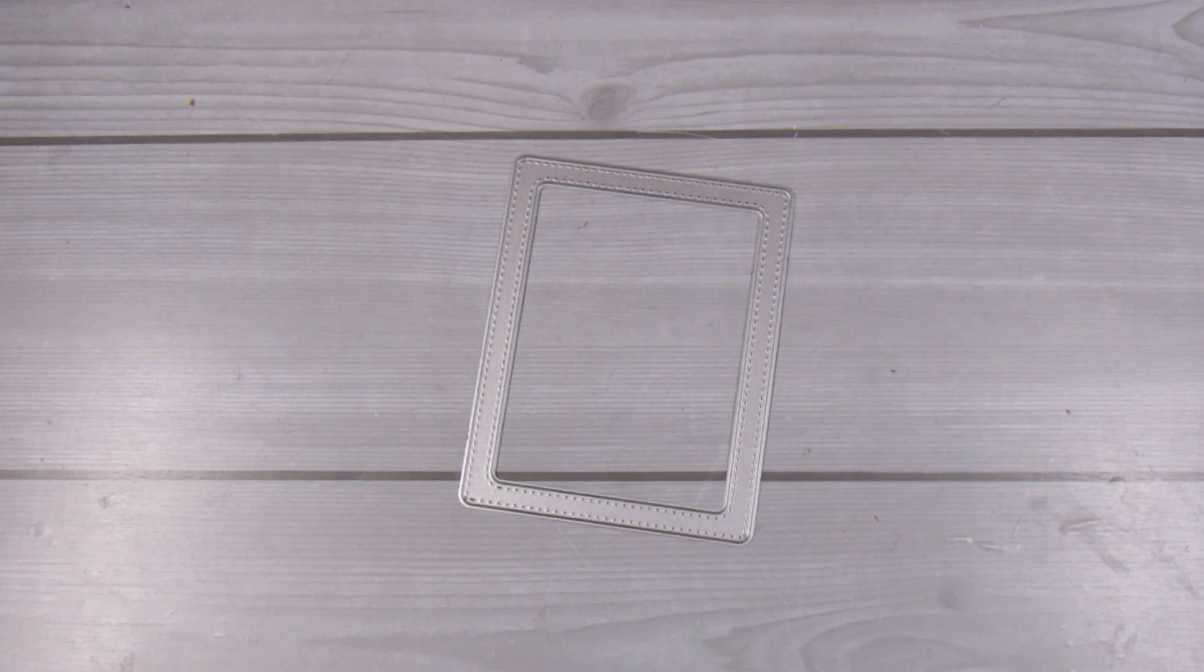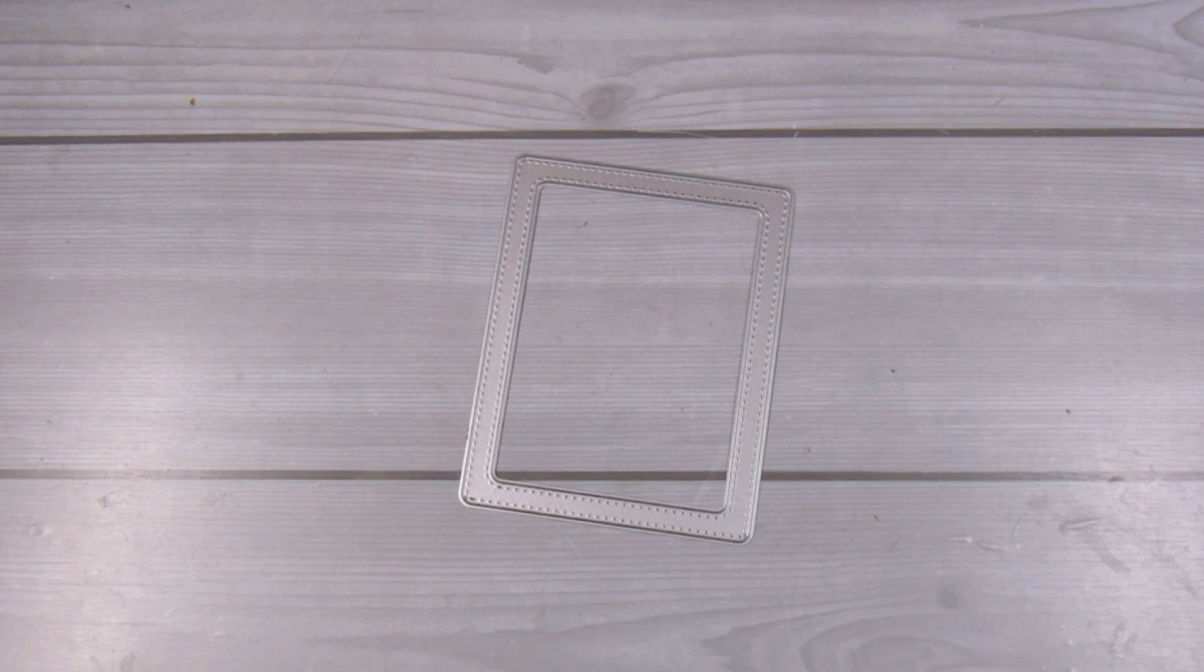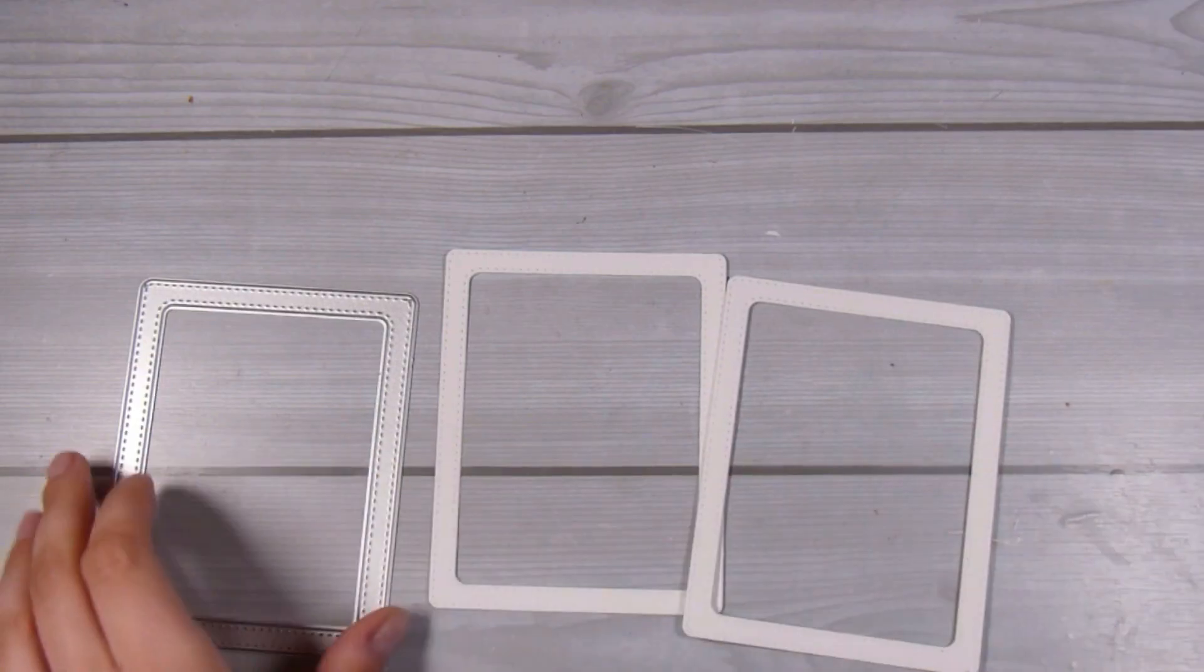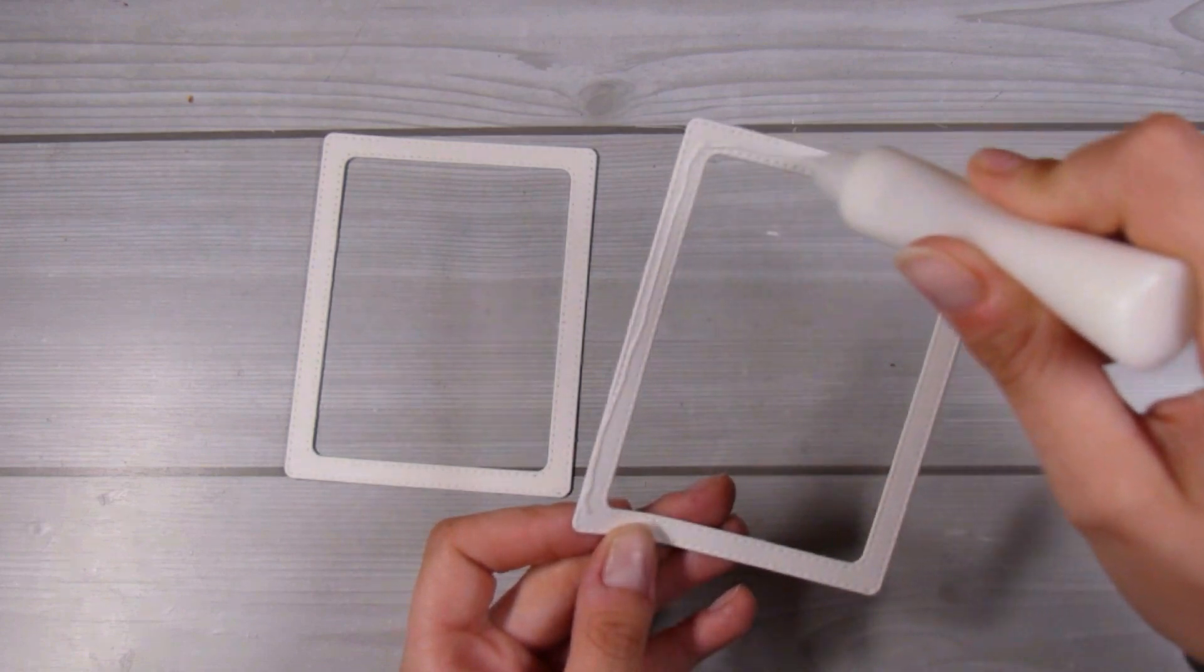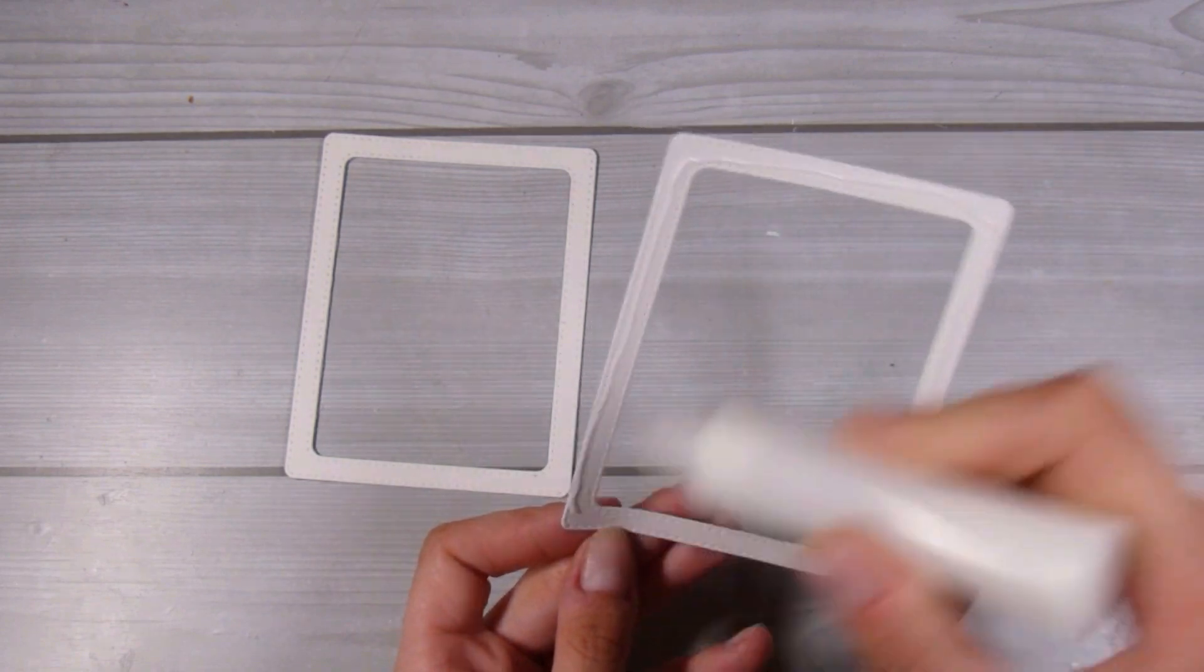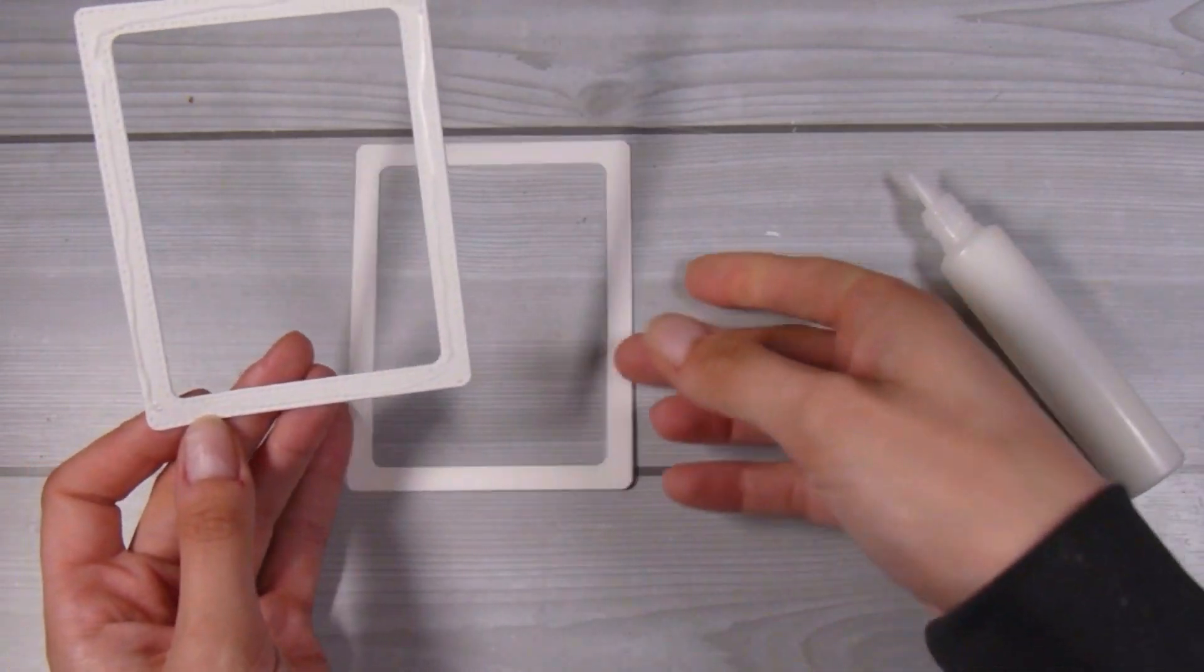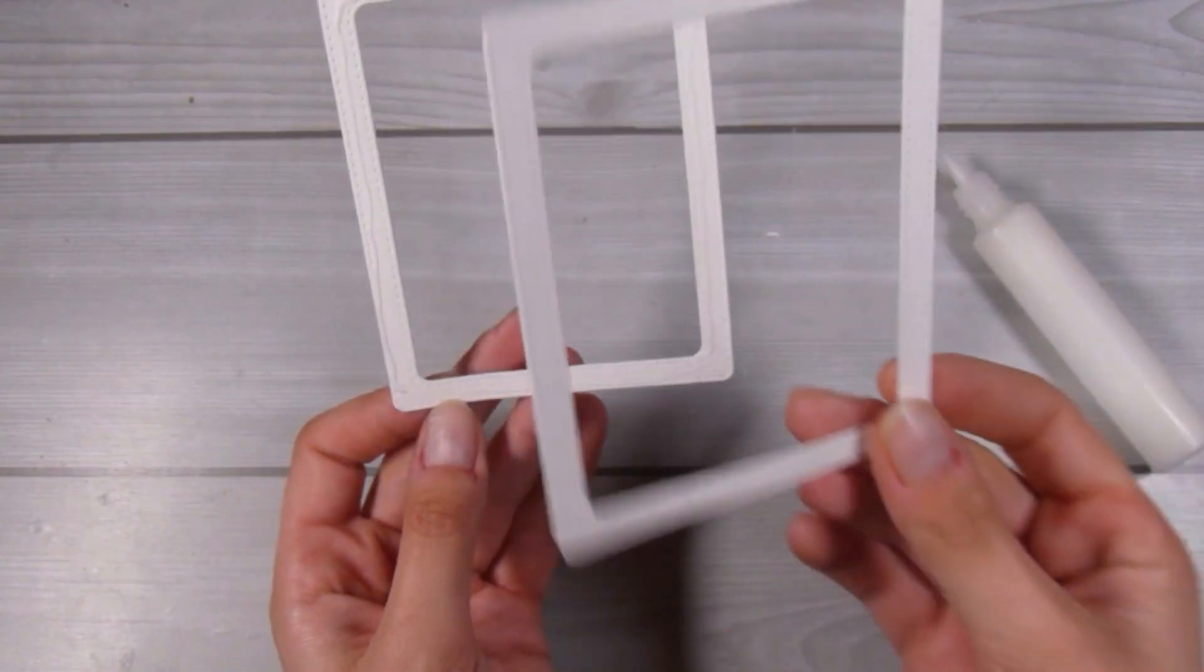I'm going to start off using this frame die. You don't necessarily have to use a frame - you could create your own using a couple of rectangles - but I happen to have this frame die which I'll link down below. I glued two of them together out of 110 pound cardstock because I need it to be quite rigid.